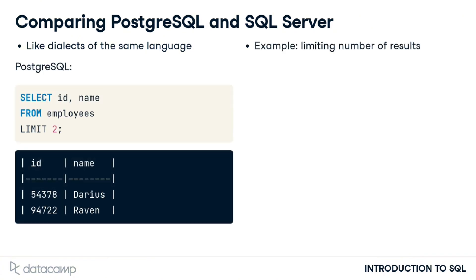Here's an example of a small difference between SQL Server and PostgreSQL. When we want to limit the number of records returned, we use the LIMIT keyword in PostgreSQL. Here, we limit the number of employee names and IDs selected to only the first two records.